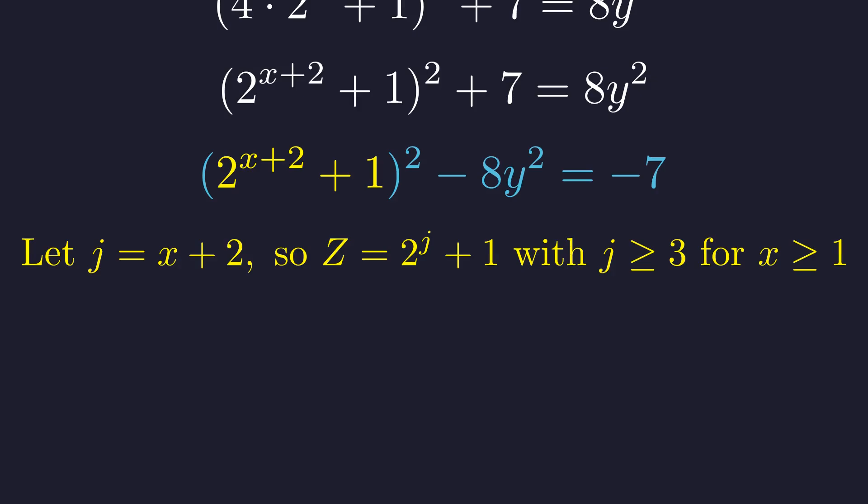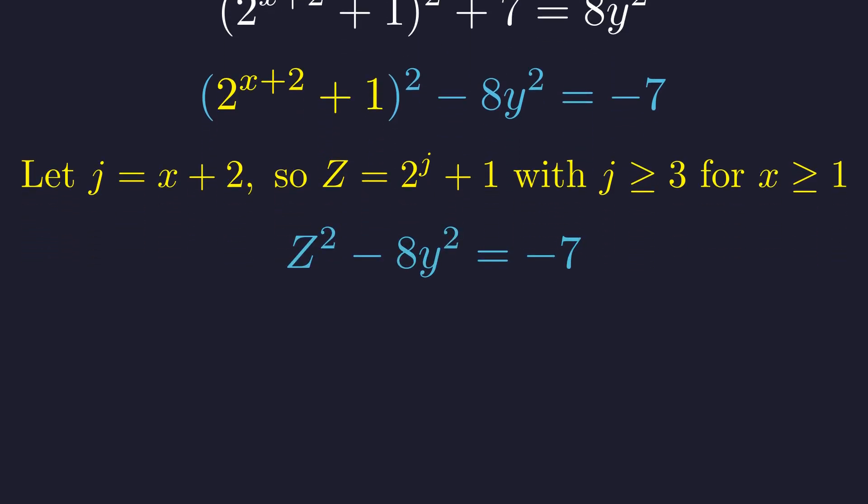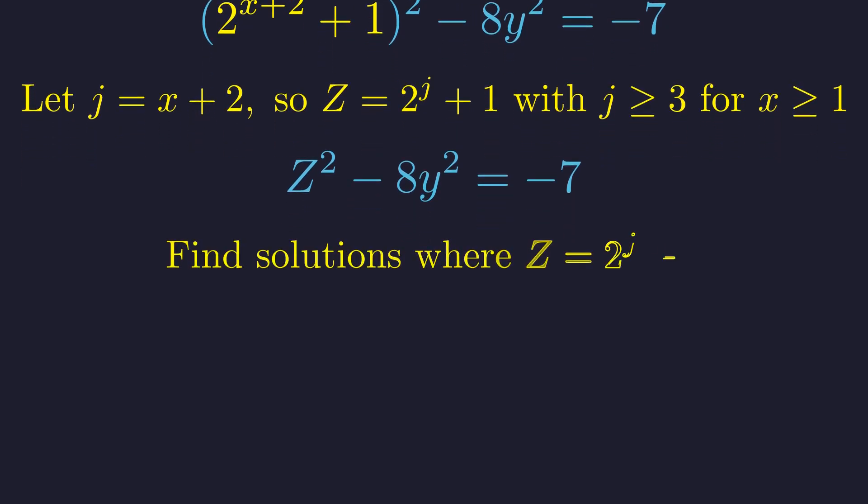For clarity, let's define j equals x plus 2, so z equals 2 to the j plus 1. For positive x, we need j at least 3. Our Pell equation becomes z squared minus 8y squared equals negative 7. We need to find which solutions to this Pell equation have z of the form 2 to the j plus 1.